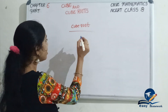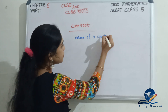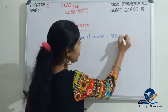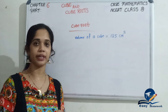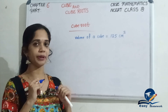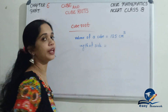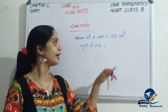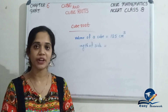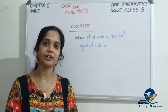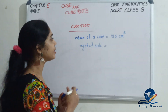A cube — it has a volume. The volume of a cube is equal to 125 cubic centimeters. We need to find the length of the side of the cube. We need to find the side length. How do we do this? We need to find which number's cube gives 125.